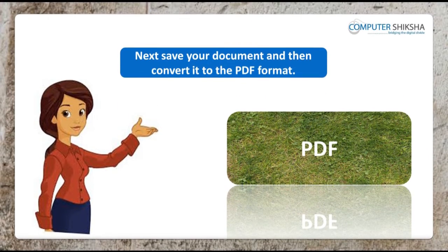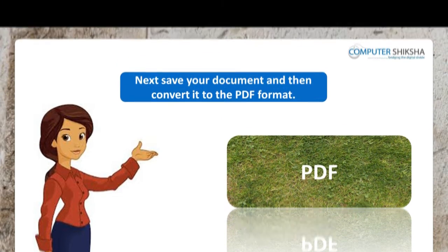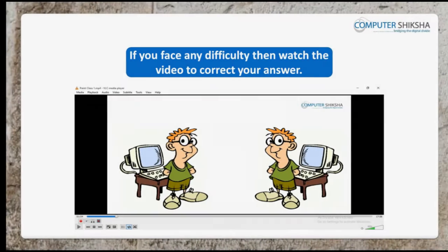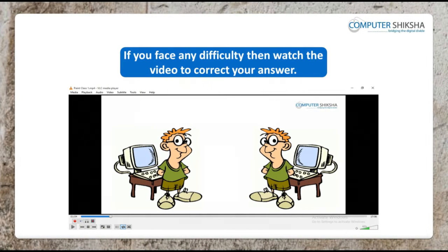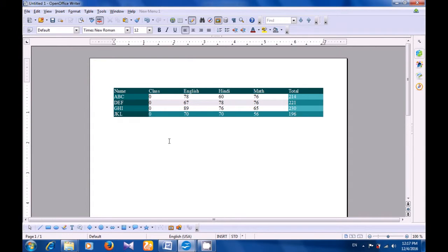Next, save your document and then convert it to the PDF format. After saving, show it to your teacher. If you face any difficulty, then watch the video to correct your answer. This video will also help us to understand the correct method to save a file and also to change it to PDF format.